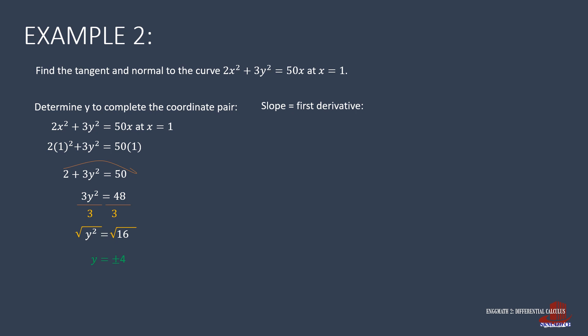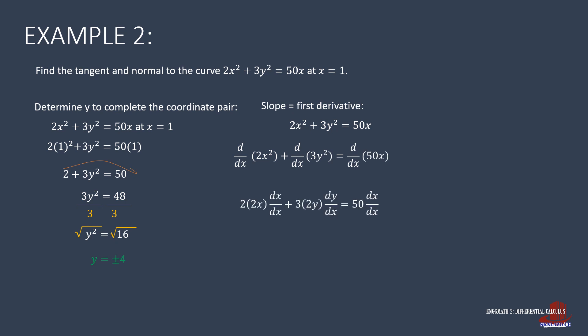Moving to the first derivative, we inject d/dx to each term. The derivative of 2x squared gives 2 times 2x times (dx/dx), and the derivative of 3y squared gives 3 times 2y times (dy/dx). The right side has constant 50 times (dx/dx). Simplifying with dx/dx=1 and dy/dx=y prime gives 4x plus 6y·y prime equals 50. Isolating y prime: 6y·y prime equals 50 minus 4x, so y prime equals (50 minus 4x) all over 6y.